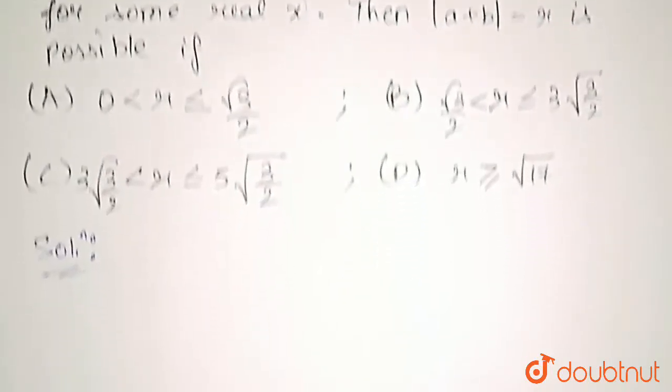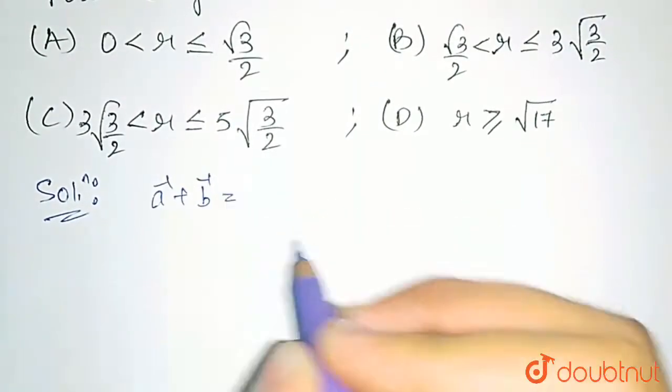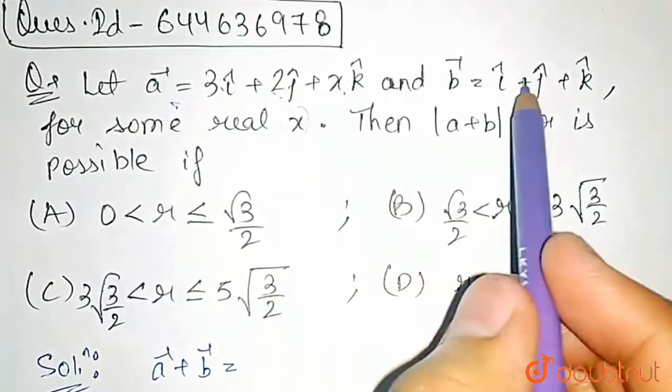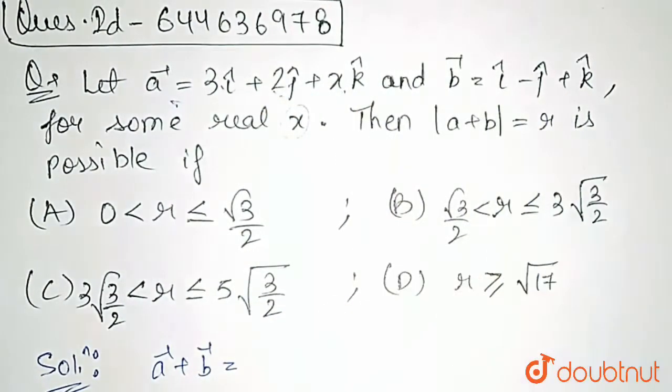First of all, let us find the value of a plus b vector. a plus b would be 3 plus 1, which is 4i, plus 2 minus 1, which is j, and x plus 1 k cap.